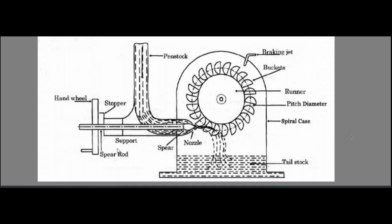Here you can see the penstock, and there is a spear to control the discharge. To control the flow, we have a change in pressure — a pressure hammer — which is handled with the surge tank. In a Pelton wheel, we don't have a draft tube, as the draft tube is associated only with reaction turbines.